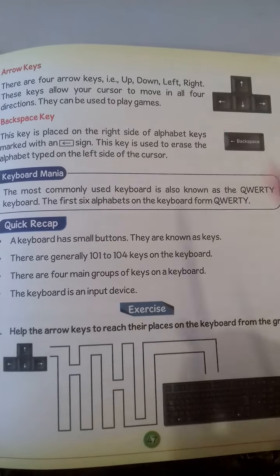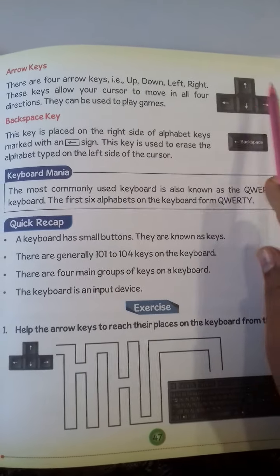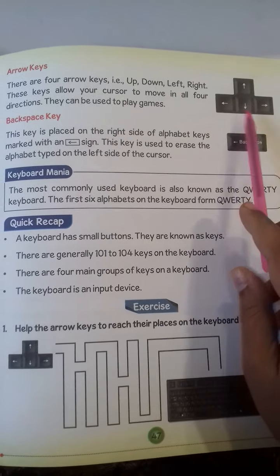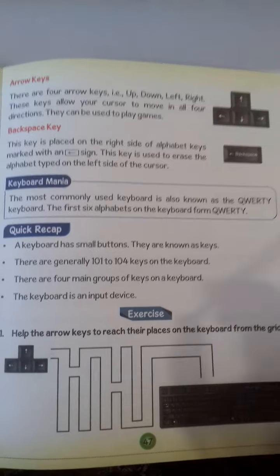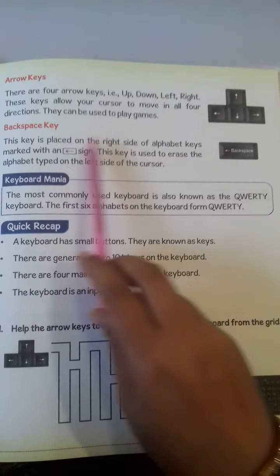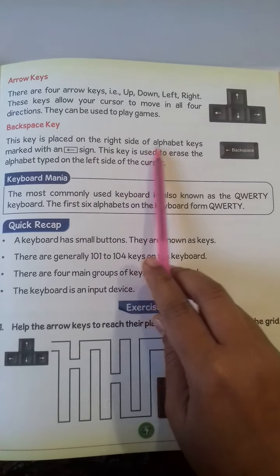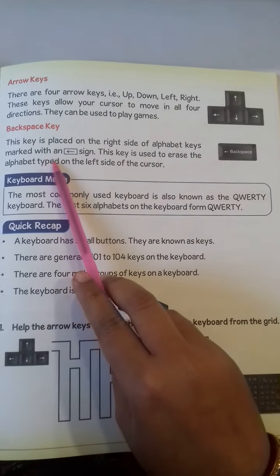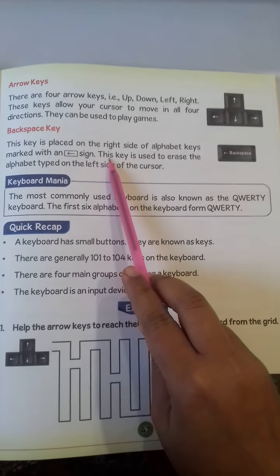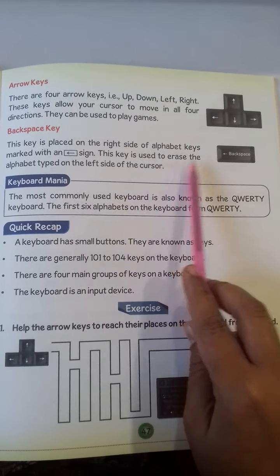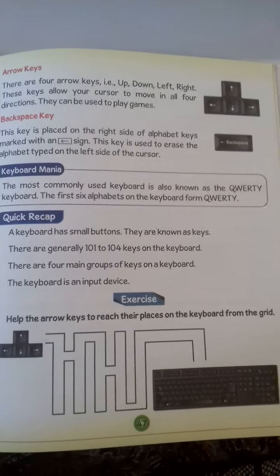Next is the arrow key — up, down, left, and right — used to move the cursor in four directions. The backspace key is placed on the right side of the alphabet keys and is marked with an arrow sign. This key is used to erase letters that have been typed.